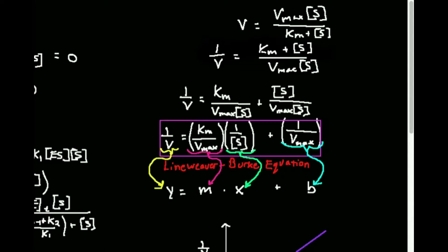It turns out that the actual Vmax occurs when the enzyme is saturated with substrate, which is certainly a finite number of substrates - it has nothing to do with the substrate concentration going to infinity. So how can we actually figure out a number in terms of what substrate concentration produces the maximum rate? Well, what we're going to do is derive a very simple equation called the Lineweaver-Burk equation, and from it we're going to generate a Lineweaver-Burk plot.